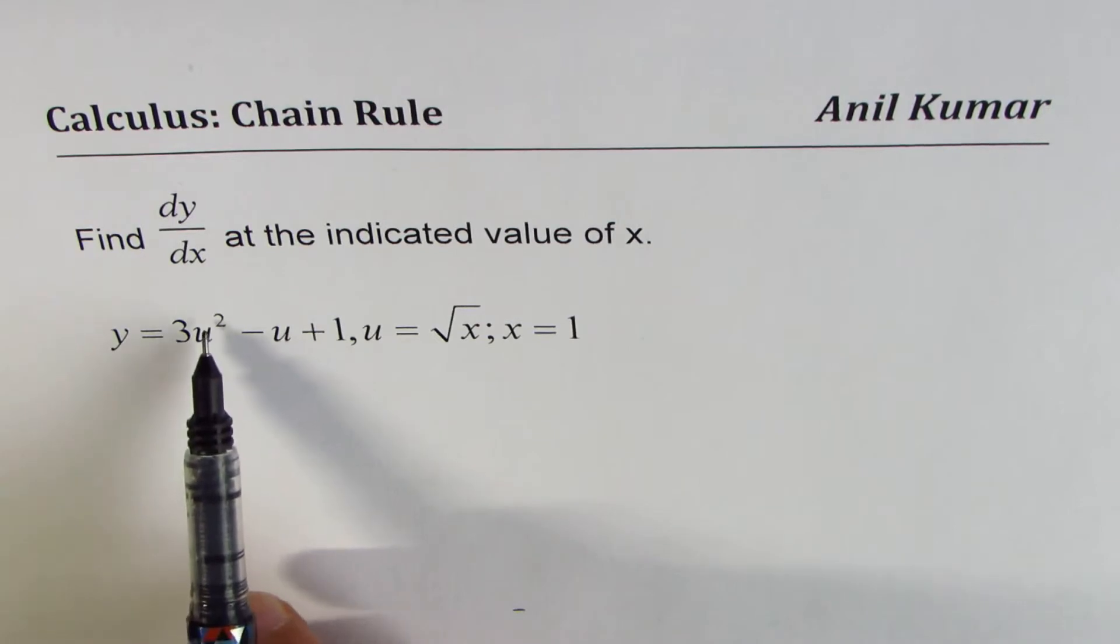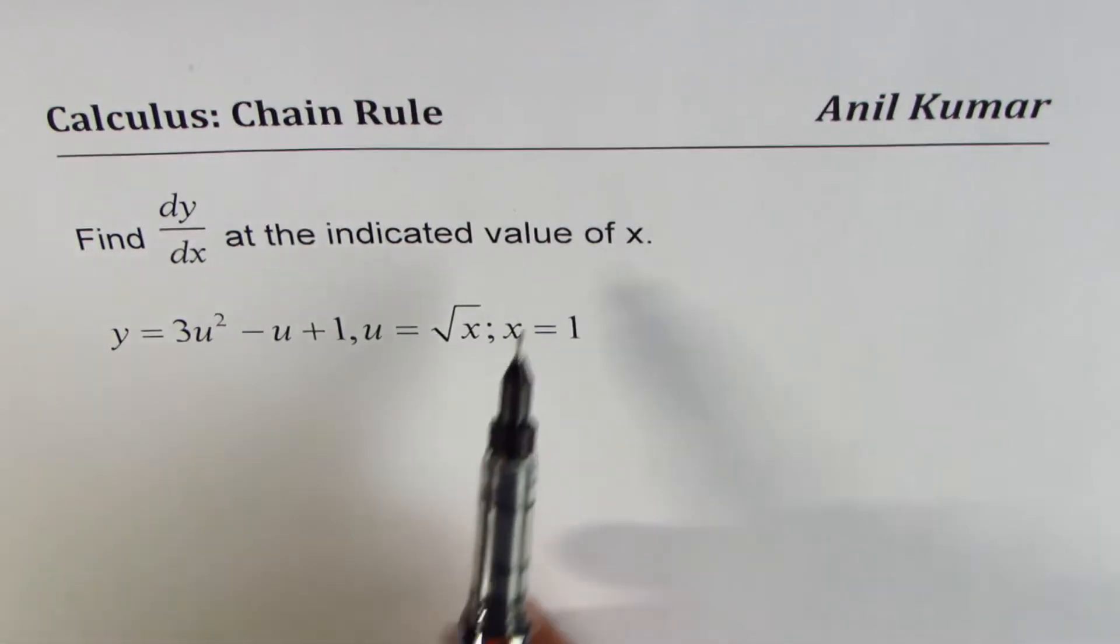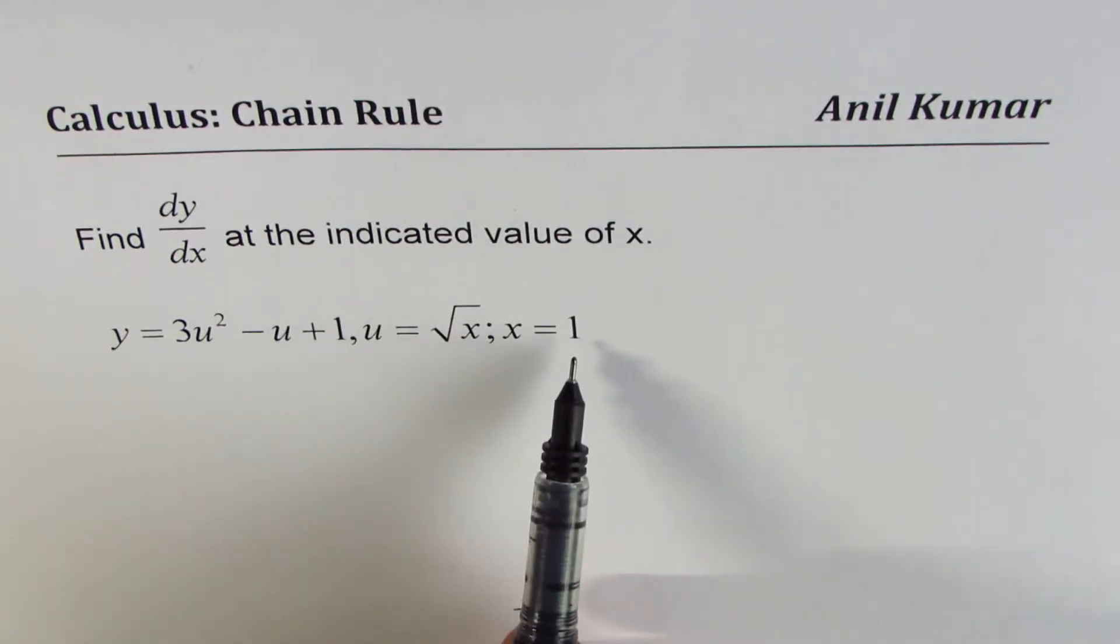y equals 3u² minus u plus 1 and u equals square root of x, x equals 1. So the indicated value is x equals 1.